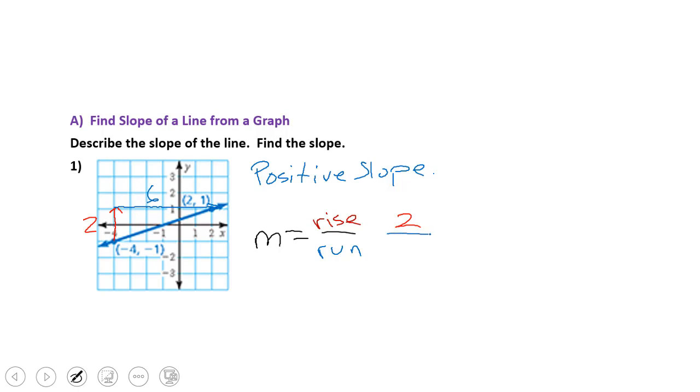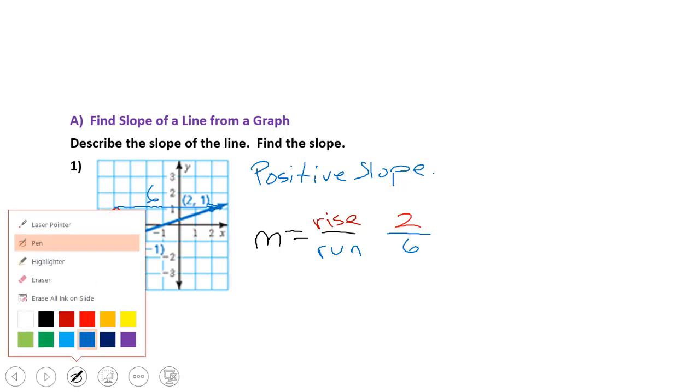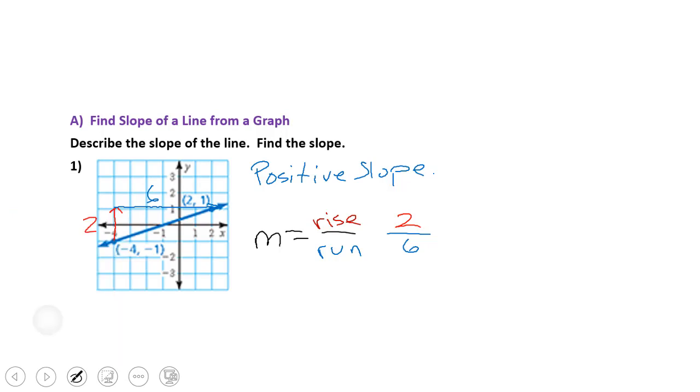So our rise is two. Our run is six. And because this is a ratio, because it acts like a fraction in the fact that it can be simplified, we can write this simplified slope as one to three. Now, you're probably wondering, well, we counted it and you got two over six. So how could the slope really be one to three or have a slope of one-third?